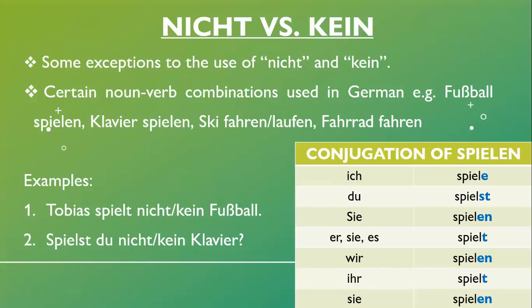Also 'Schifahren' or 'Schilaufen'. Note that interestingly in German, skiing is 'Schifahren', but we can also say 'Schilaufen', meaning literally 'to drive the ski' or 'to run the ski'. Similarly, 'Fahrrad fahren' — in English we say 'ride a bicycle', but in German we say 'drive a bicycle'.